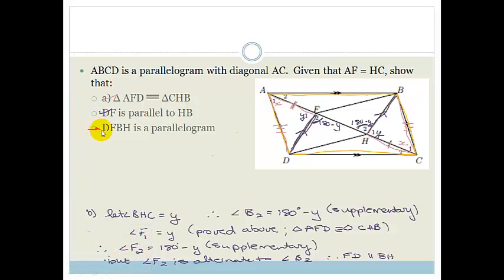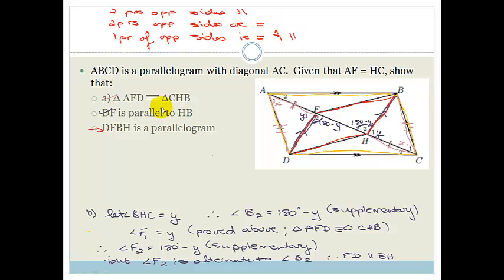Let's do red. So, now they're asking us to prove that D, F, B, H is a parallelogram. So, they want us to prove that D, F, B, H is a parallelogram. To prove something is a parallelogram, let's write it up here. We can either have two pairs of opposite sides are parallel, or we can have two pairs of opposite sides are equal, or we can have one pair of opposite sides is equal and parallel.